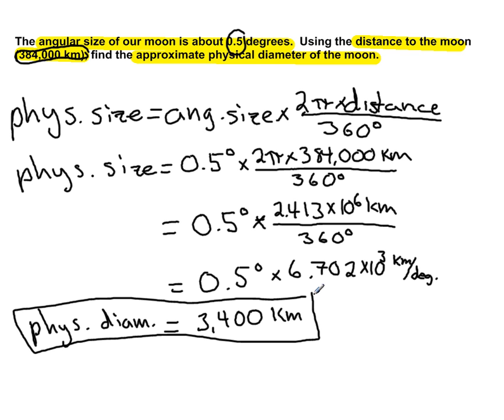So the number we got is the approximate physical diameter of the moon, and I can actually write a sentence about that. It's going to be a little hard on my tablet here, but I'll give it a try.